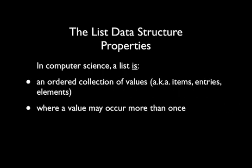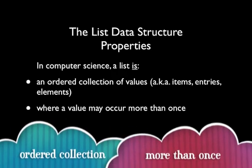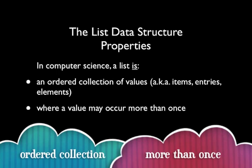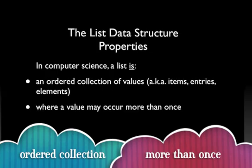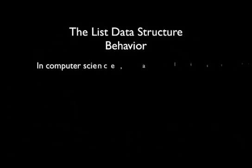A list is a data structure that's best described by its properties and behavior. A list is an ordered collection of values where a value may occur more than once. The first key phrase is 'ordered collection,' which means the order in which you put things in the list is important — so 1, 2, 3 and 3, 2, 1 are different lists. The second is that a value may occur more than once, meaning duplicate values are allowed. These two things distinguish a list from a set.